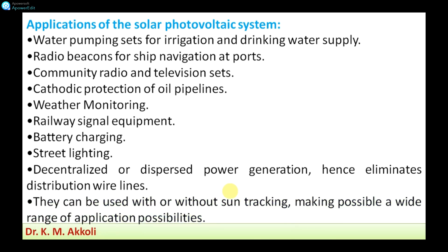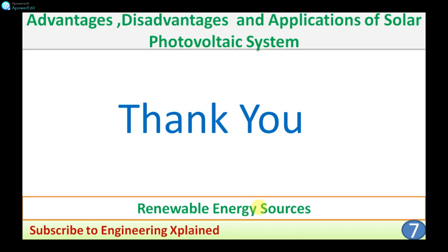Finally, solar photovoltaic systems can be used with or without sun tracking, making possible a wide range of applications beyond those mentioned here. As an important solar energy conversion system, it has many applications, major advantages, and only a few disadvantages. Being a tropical country, India can use this system continuously. Thanks for watching — if you like, share, subscribe, and comment on my video.